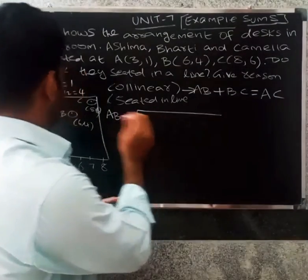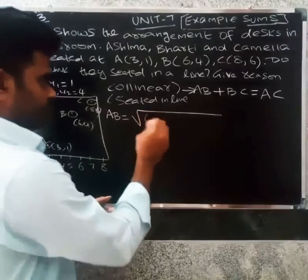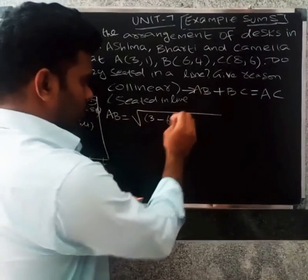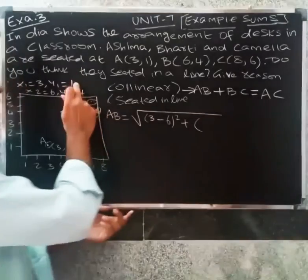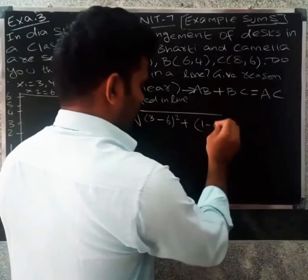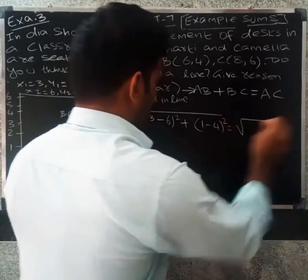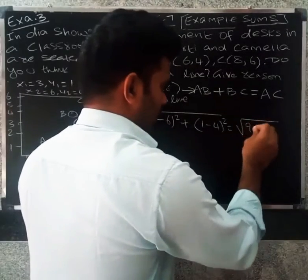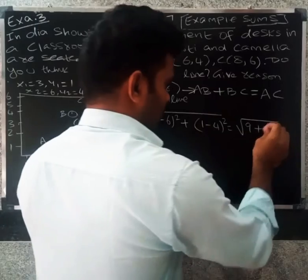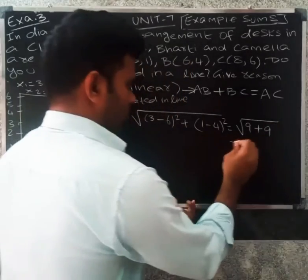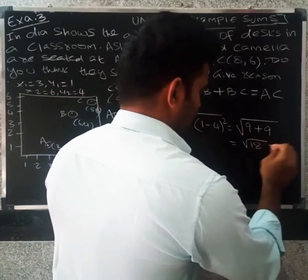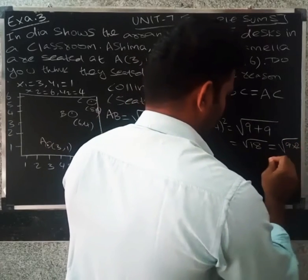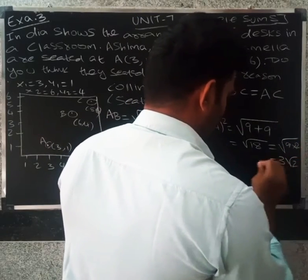So AB equals the square root of (x1 minus x2) whole square plus (y1 minus y2) whole square. That is (3 minus 6) whole square plus (1 minus 4) whole square, which is (minus 3) squared plus (minus 3) squared, equal to 9 plus 9, equal to 18. So AB equals root of 18, which is 3 root 2.